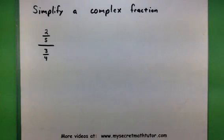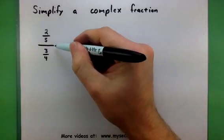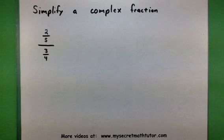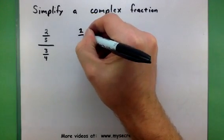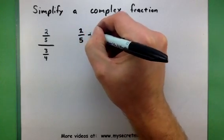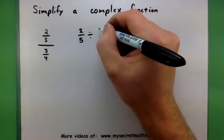In order to simplify this, we want to turn this main fraction bar into just division. So, let me show you what this turns into. Basically, I have 2 fifths, which is on the top, being divided by 3 fourths on the bottom.